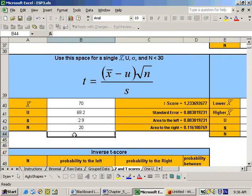Once you put that information in there, you get your T-score for the 70, which is 1.233. In other words, we're 1.233 standard errors, or standard deviations of the mean, above the population mean.